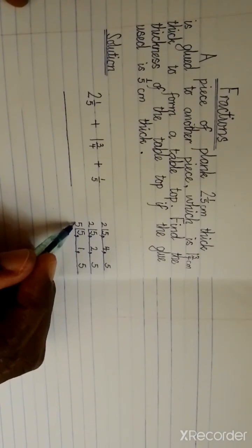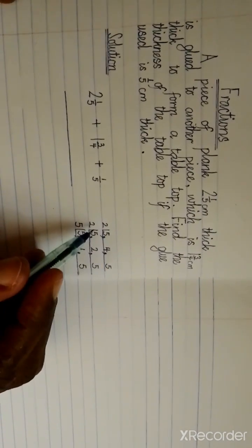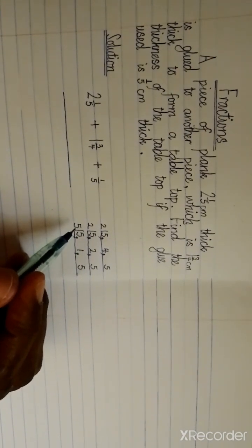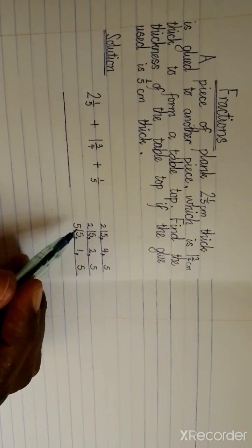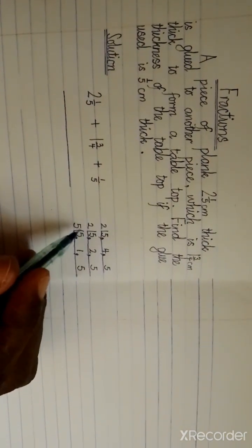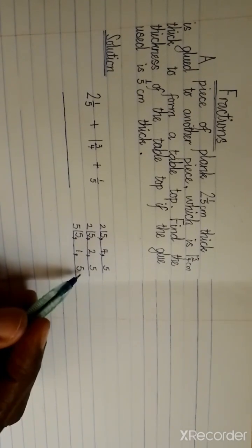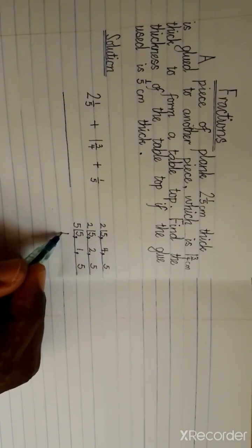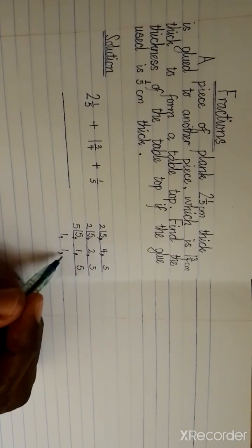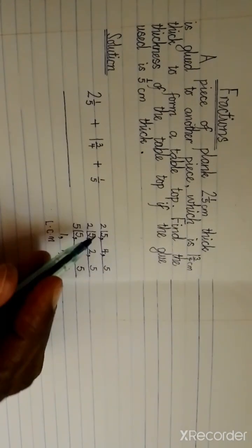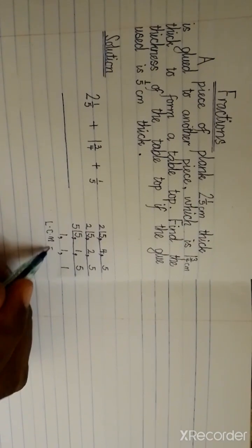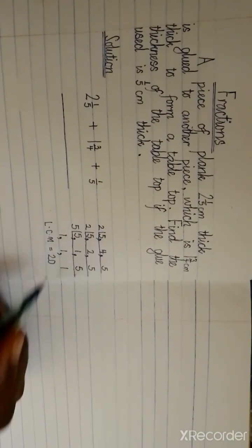Remember, your prime numbers are two, three, five, seven, eleven, thirteen, seventeen, nineteen, twenty-three, twenty-nine, thirty-one, and thirty-seven — from one to forty. After two we have three, but since three doesn't go into any of these remaining numbers, we use five. Five into five is one, and five into five is one. So our LCM is two times two times five, which gives us twenty.